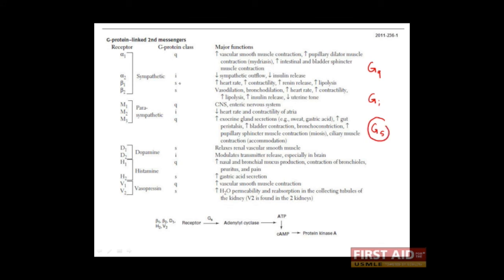The GS protein is used by the beta-1, beta-2, D1, H2, and V2 receptors. When these receptors bind their respective ligands, there is a conformational change in the receptor that activates the GS protein. The GS protein goes on to activate an enzyme known as adenylyl cyclase. When activated, adenylyl cyclase converts ATP into cyclic AMP. Cyclic AMP then activates protein kinase A, which then triggers a signaling pathway that results in its own set of effects.